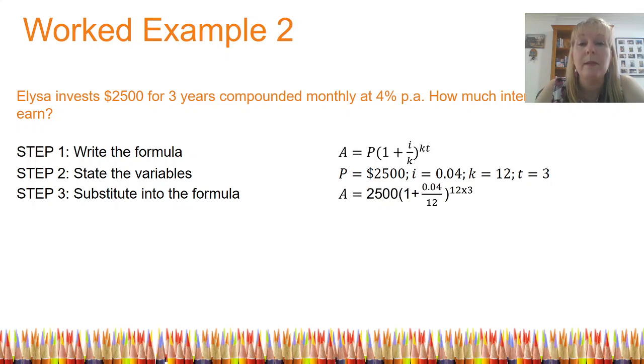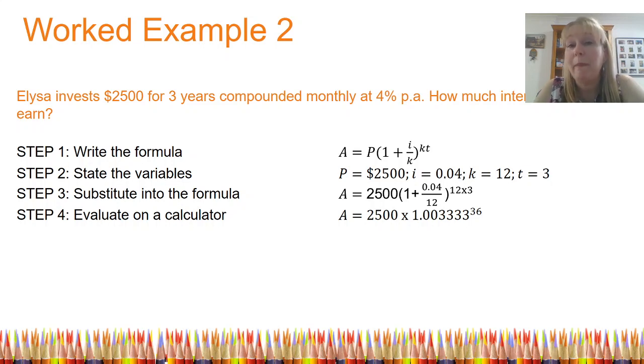My next step is to use my calculator to simplify this a little bit further. You'll note that I've taken what's in brackets. And I've also changed my power from 12 times 3 to 36. So I'm taking it step by step and showing my teacher what I'm doing as I go. The next step would be to evaluate the decimal number and the power on the right hand side. And then to make a statement that A is equal to $2,818.15. Notice I've now put the currency back on.